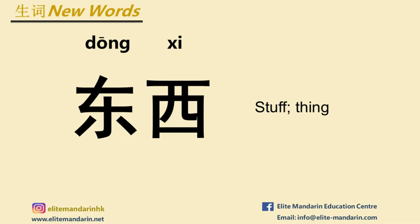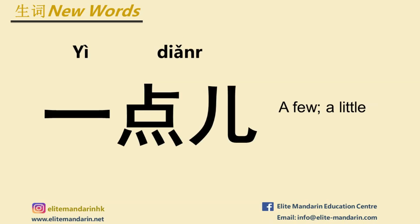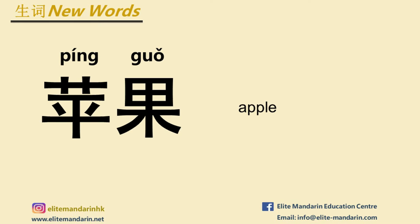Let's learn some new words for text one. 东西 — things, stuff. 一点 — a few, a little. 苹果 — apple.